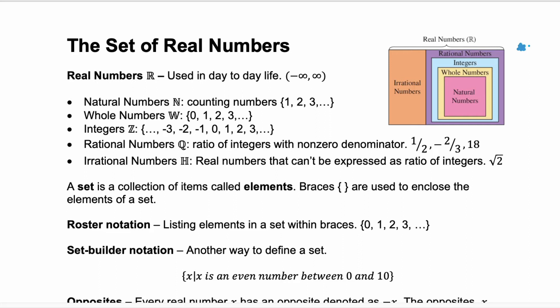Rational numbers are any ratio of integers or a fraction where the denominator isn't zero. And then irrational numbers which are your real numbers that can't be expressed as a ratio. So the square root of two or pi would be irrational.